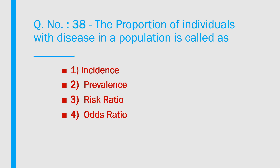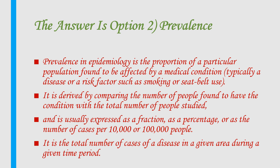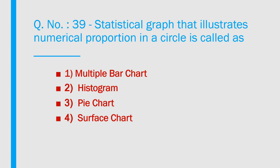Question number 38: The proportion of individuals with a disease in a population is called: 1) Incidence, 2) Prevalence, 3) Risk ratio, 4) Odds ratio. Answer is option 2 — Prevalence. In epidemiology, prevalence is the proportion of a particular population found to be affected by a medical condition. It is derived by comparing the number of people found to have the condition with the total number of people studied, expressed as a fraction, percentage, or cases per 10,000 or 1 lakh people.